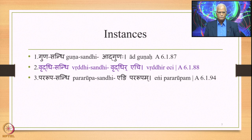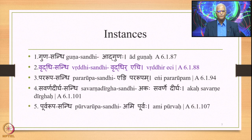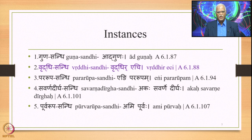The third instance is Pararuupa Sandhi, stated by the sutra Engi Pararupam (6.1.94). The fourth is Savarna Dirgha Sandhi, stated by the sutra Akah Savarne Dirghah (6.1.101). And the fifth is Purvaruupa Sandhi, stated by the sutra Ami Purvah (6.1.107). Among these five, we have already studied the first one and will now study the second — Vriddhi Sandhi.